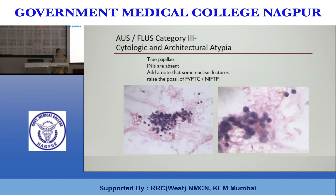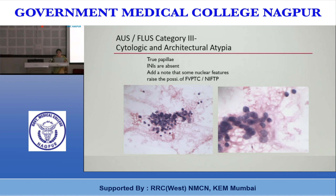In AUS with both cytologic and architectural atypia, a totally different story begins. Microfollicles along with extensive mild cytologic atypia are more common with FVPTC (follicular variant of papillary thyroid carcinoma) or its indolent form NIFTP (non-invasive follicular thyroid neoplasm with papillary-like nuclear features), though this has not been firmly established. Cytologic atypia here takes the form of mild nuclear enlargement, pale nuclei, well-defined sharp thick nuclear margins, and crowding — but true papillae and nuclear inclusions should not be seen if considering NIFTP.